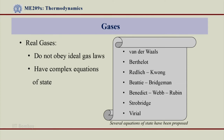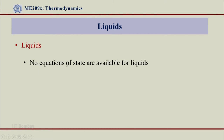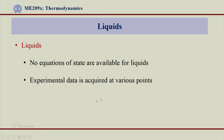Now let us go to liquids. For liquids, unfortunately, we do not have any equation of state. For gases I can compute all the properties using the ideal gas law or real gas law, but I do not have any such equation of state available for liquids. This is a very important difference between gases and liquids. So how do I get properties of liquids? If I know pressure and temperature, how will I get other properties like specific volume, density, etc.? What I do is conduct a lot of experiments.